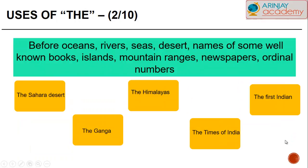THE is also used before the names of oceans, rivers, seas, deserts, names of some well-known books, islands, mountain ranges, newspapers, and ordinal numbers. For example, the Sahara Desert, the Himalayas, the Ganga, the Times of India, and the First Indian.